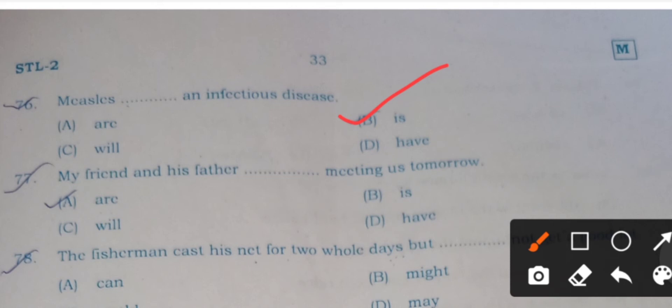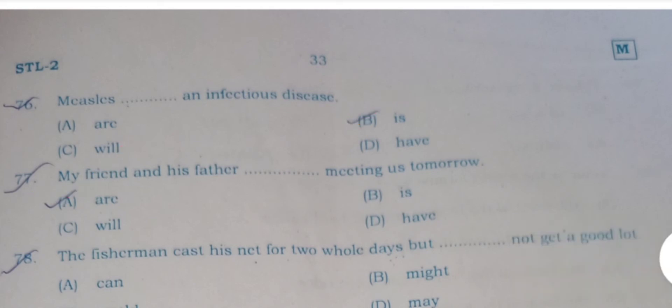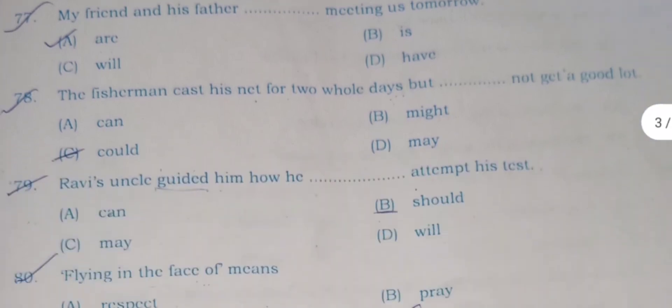Question 77: My friend and his father are meeting us tomorrow. When two subjects are joined by conjunction 'and', then we always use plural verb. Here 'are' is correct. My friend and his father are meeting us tomorrow.